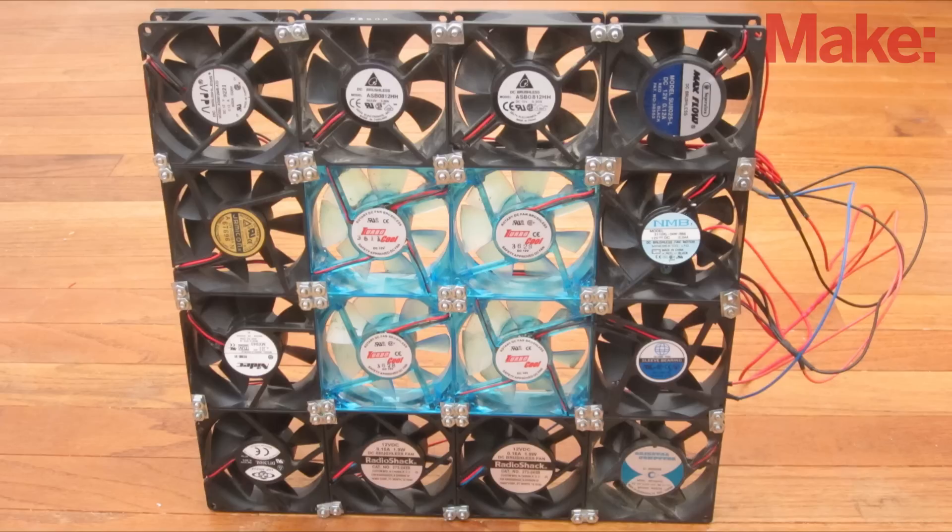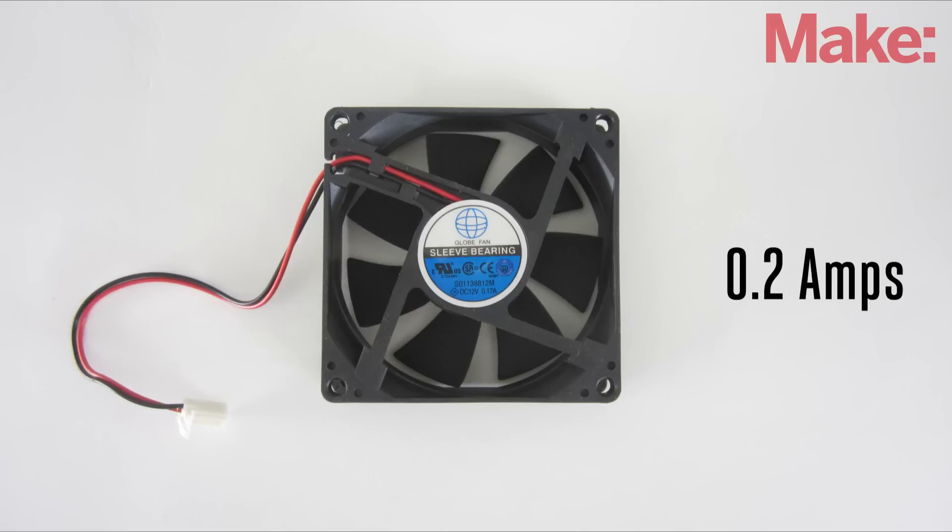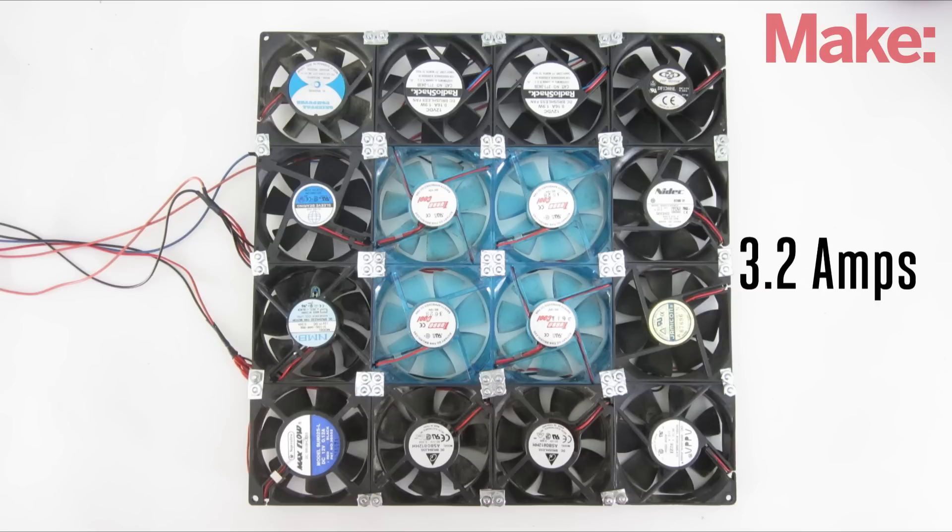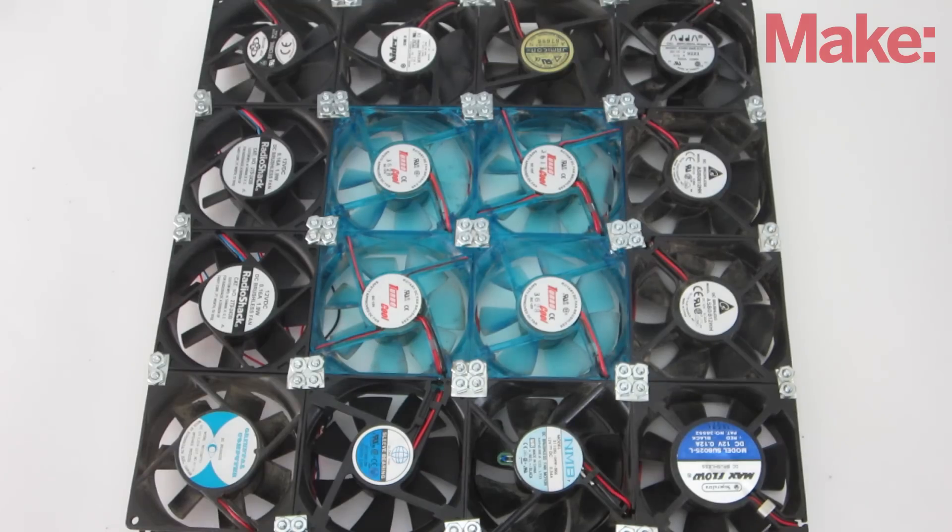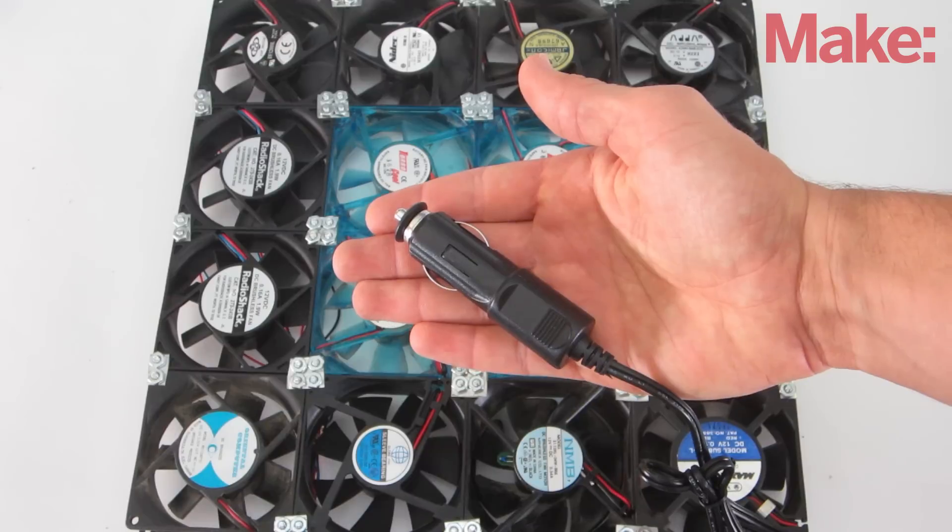Now your fan is complete. You just need to decide how to power it. A typical PC fan uses about 0.2 amps, so 16 fans will need 3.2 amps to run. The easiest way to power the fan is with a large 12-volt battery such as a car battery. All you have to do is add an adapter plug and you can plug it directly into your car.